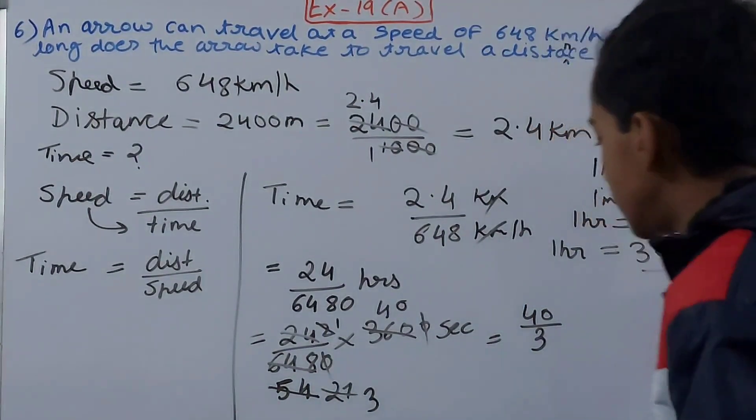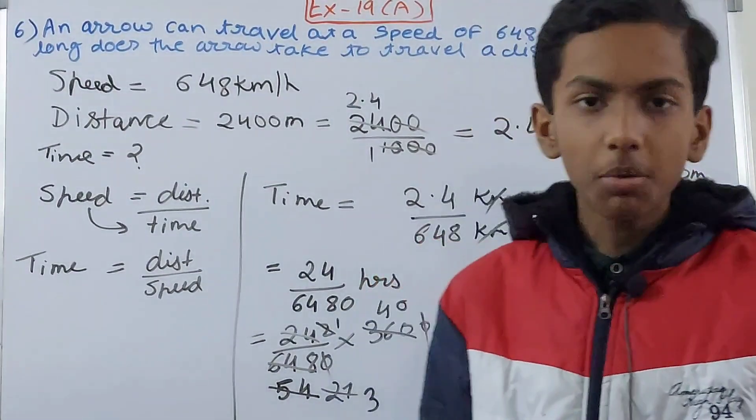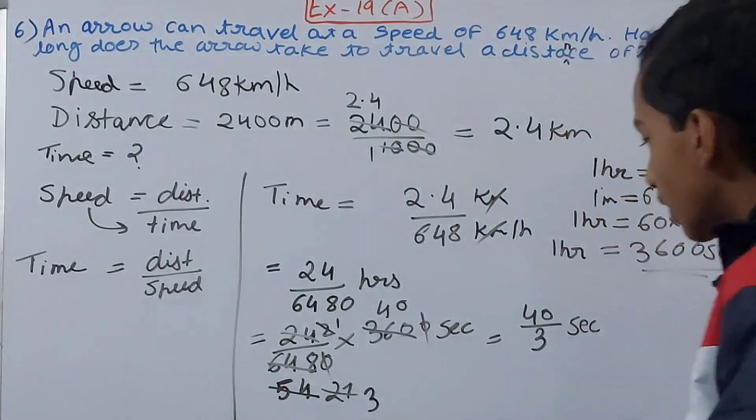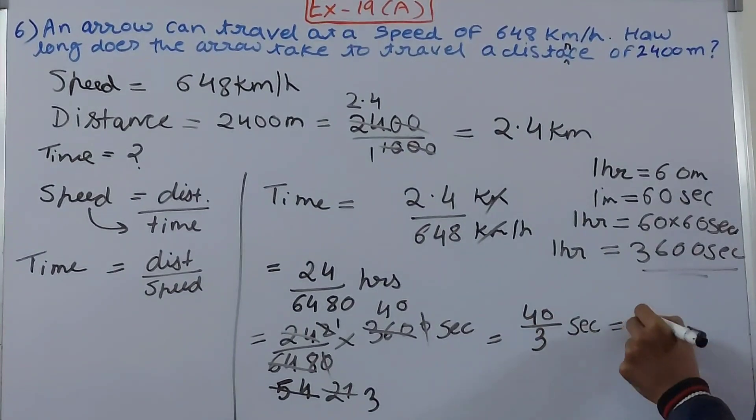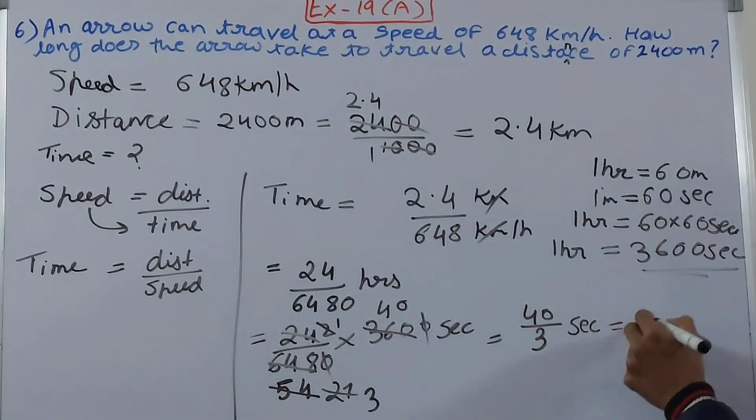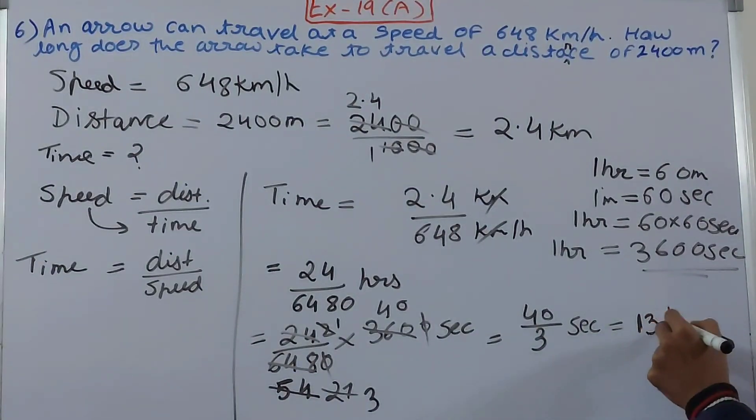So at last we are left with 40 upon 3. Now convert this 40 upon 3 into a mixed fraction, because generally we do not write this in an improper fraction. Never leave your answer in an improper fraction. So convert this into a mixed fraction. So this becomes 13 whole and one will be left here, so 1 upon 3 seconds. So this becomes our final answer.